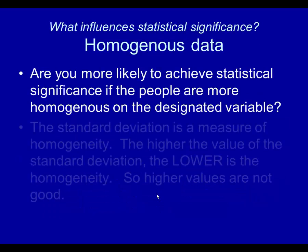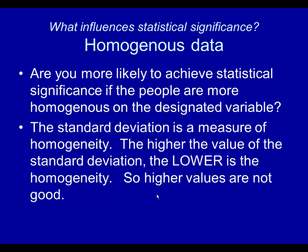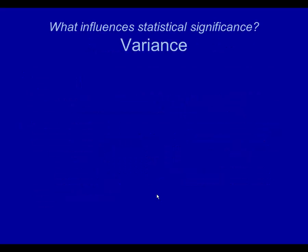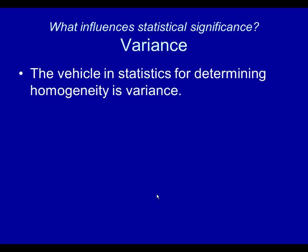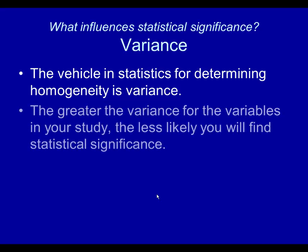One of the issues is whether the data is homogenous or how much variance there is. Are you more likely to achieve statistical significance if people are more homogenous on the designated variable — if people are more like each other? The standard deviation is a measure of homogeneity. The higher the value of the standard deviation, the lower the homogeneity, so higher values are not good. The vehicle in statistics for determining homogeneity is variance. The greater the variance for the variables in your study, the less likely you will find statistical significance.